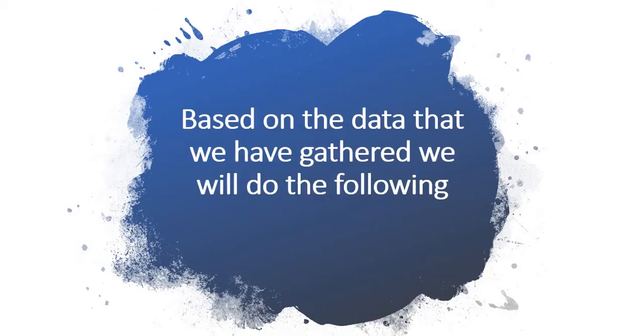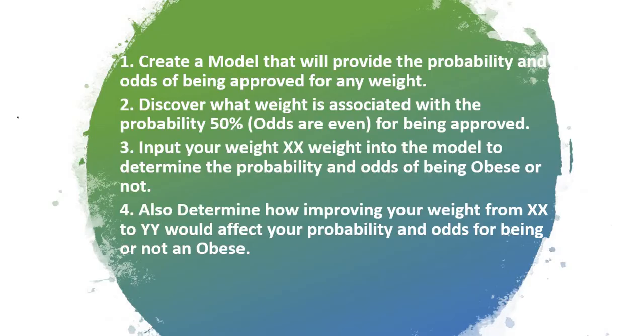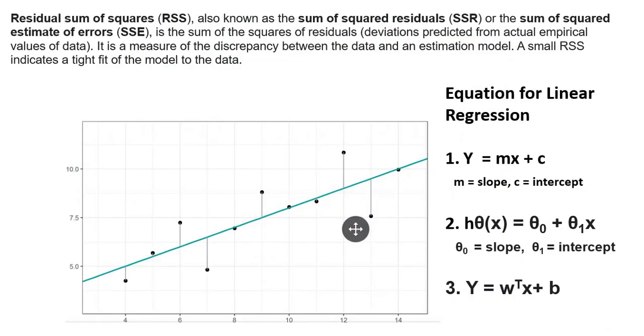Let's create a model that will provide the probability and odds of classifying obese and not obese. First, we will create a model using Python that provides probability and odds for any weight. Then we'll discover what weight is associated with 50% probability, input our weight to determine probability and odds of being obese, and show how to improve your weight if you're overweight so you belong to the not obese category.